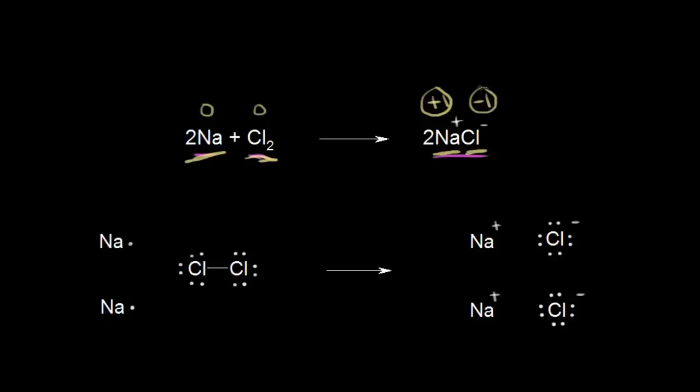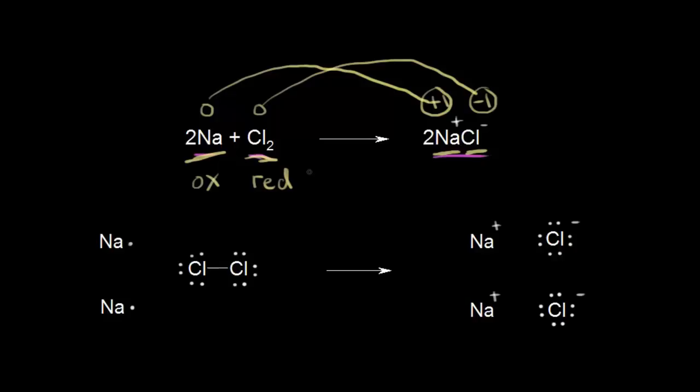Let's think about what happened in this redox reaction. Sodium went from an oxidation state of zero to an oxidation state of plus one — that's an increase in the oxidation state. Therefore, by definition, sodium is being oxidized. When you look at chlorine, it goes from an oxidation state of zero to negative one — that's a decrease in the oxidation state. Therefore, chlorine is being reduced.